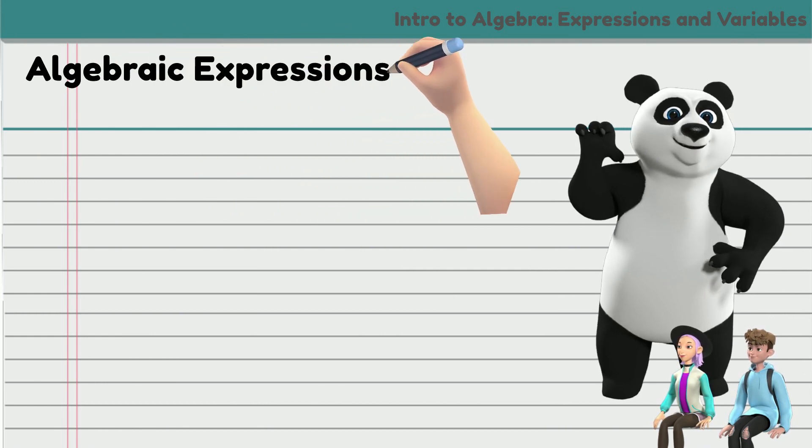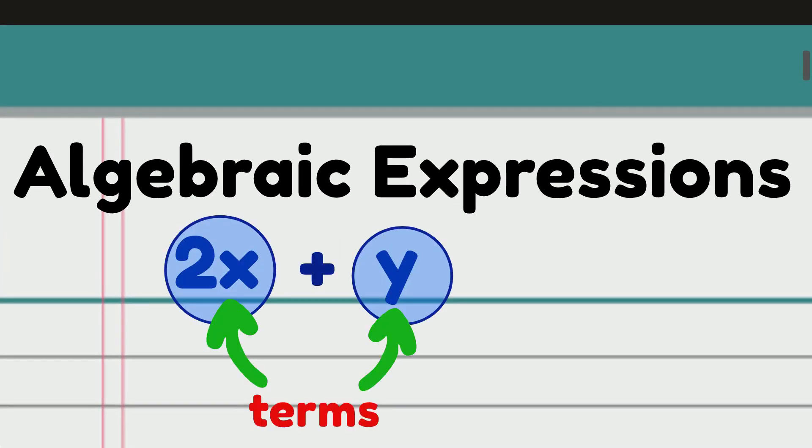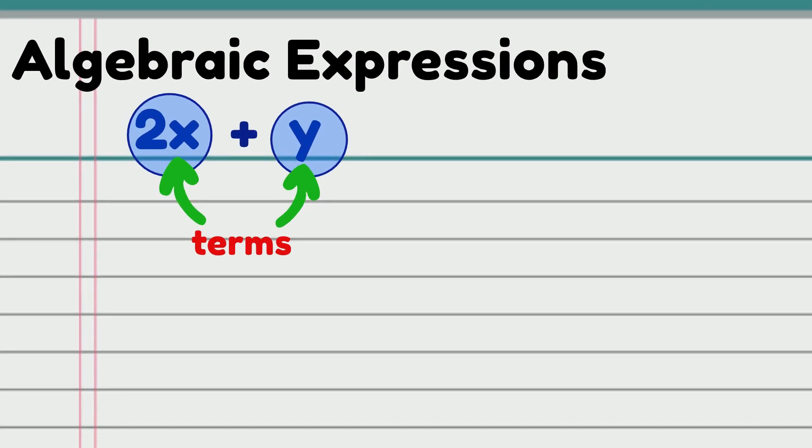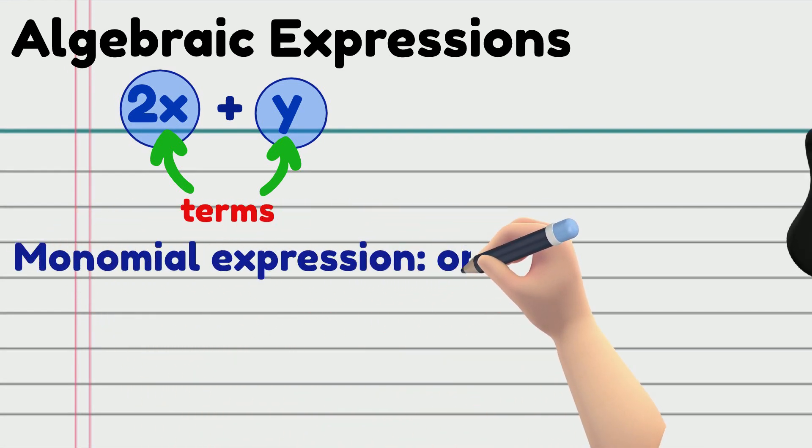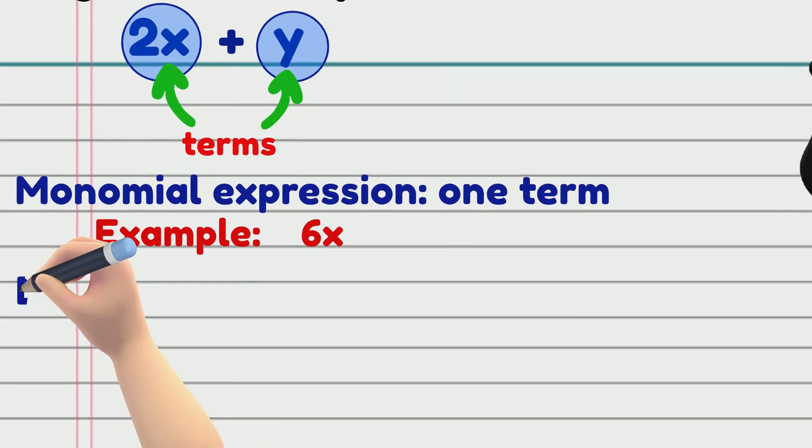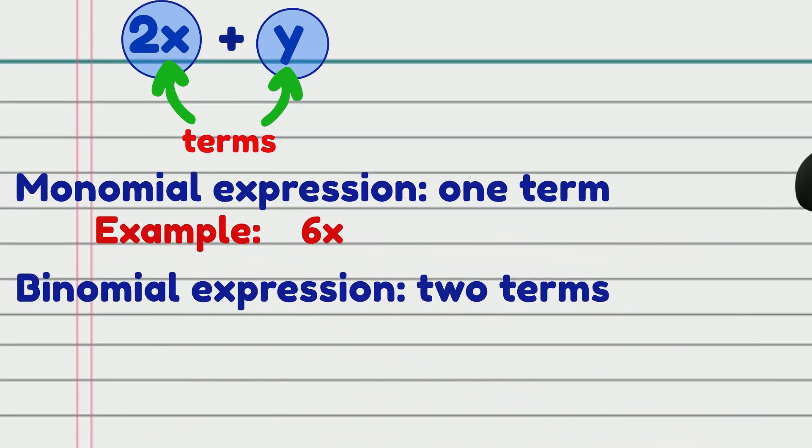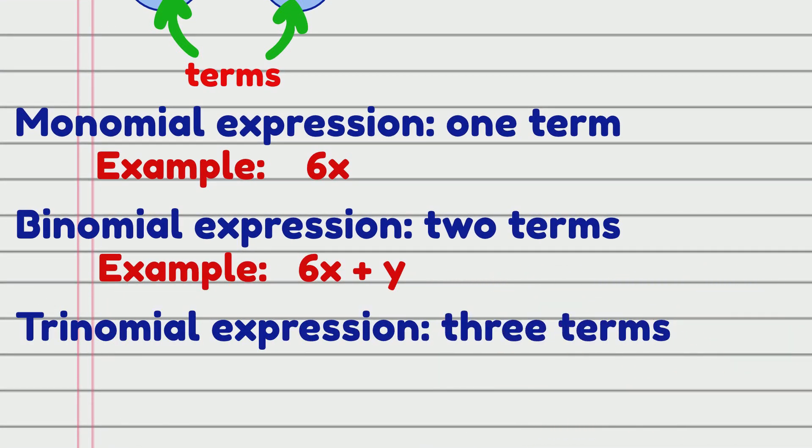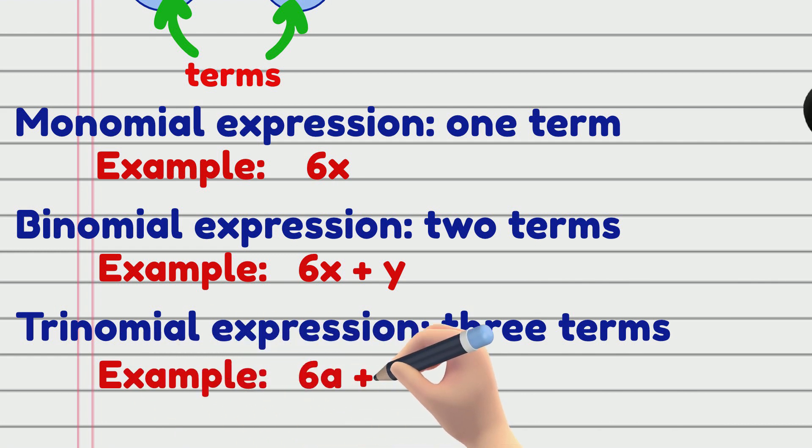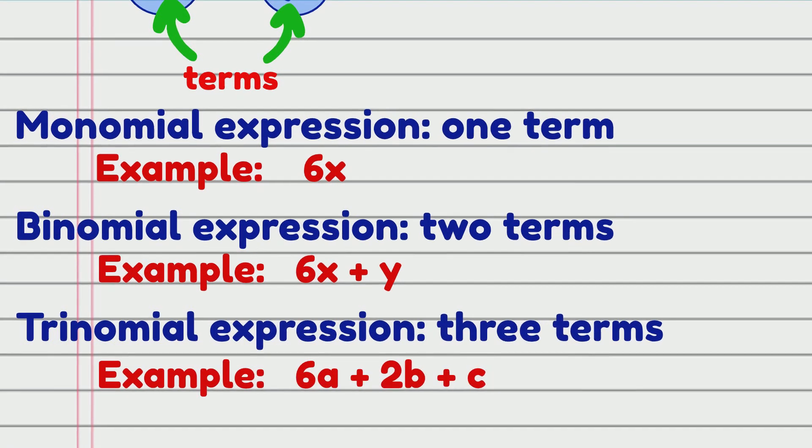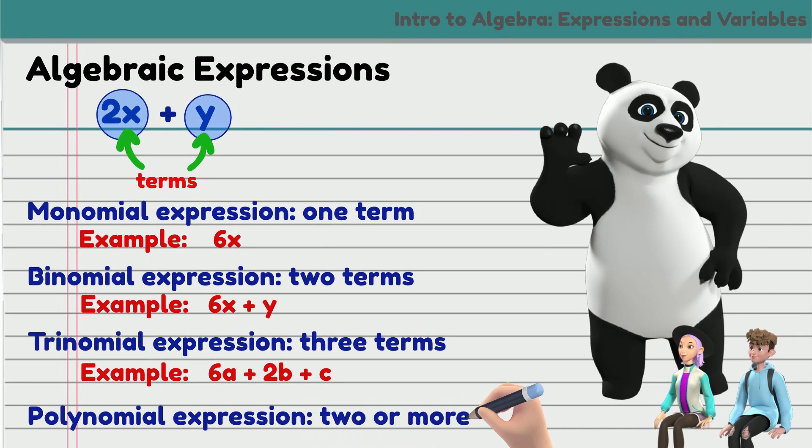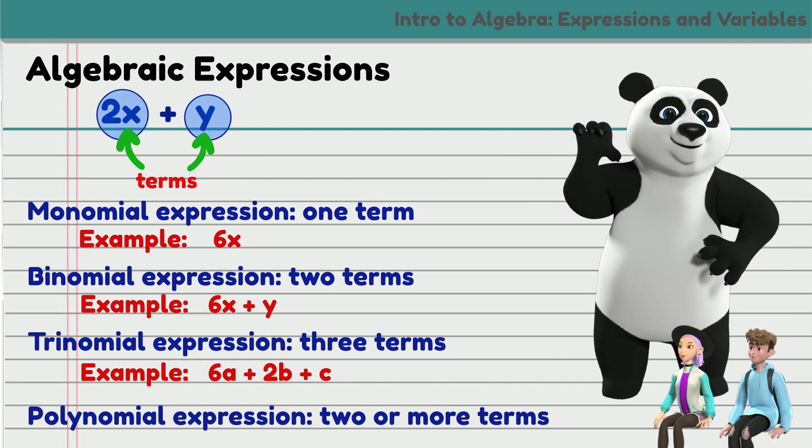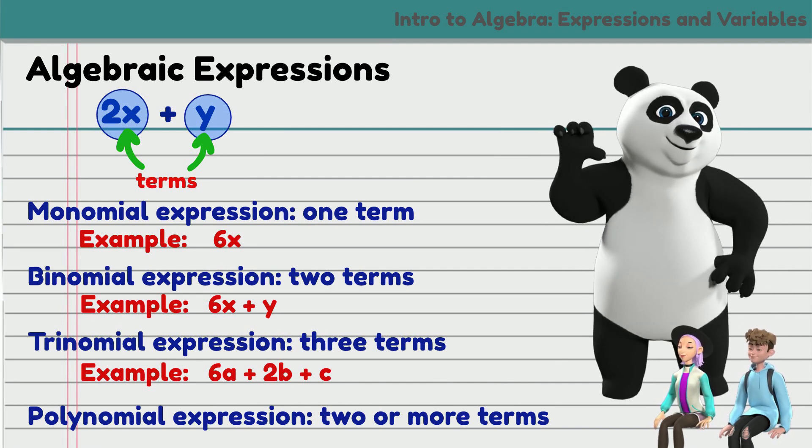Algebraic expressions are classified on the basis of the number of terms in the expression. Monomial expressions contain only one term. An example is 6x. Binomial expressions contain two non-zero terms. An example is 6x plus y. Trinomial expressions have three non-zero terms. Example is 6a plus 2b plus c. Polynomial expressions have two or more terms. This also includes binomial and trinomial expressions.